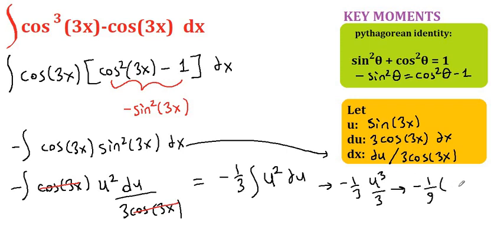Instead of u, you bring back sine of 3x, so it's negative 1 over 9 times sine cubed of 3x plus c. So this is our final answer.